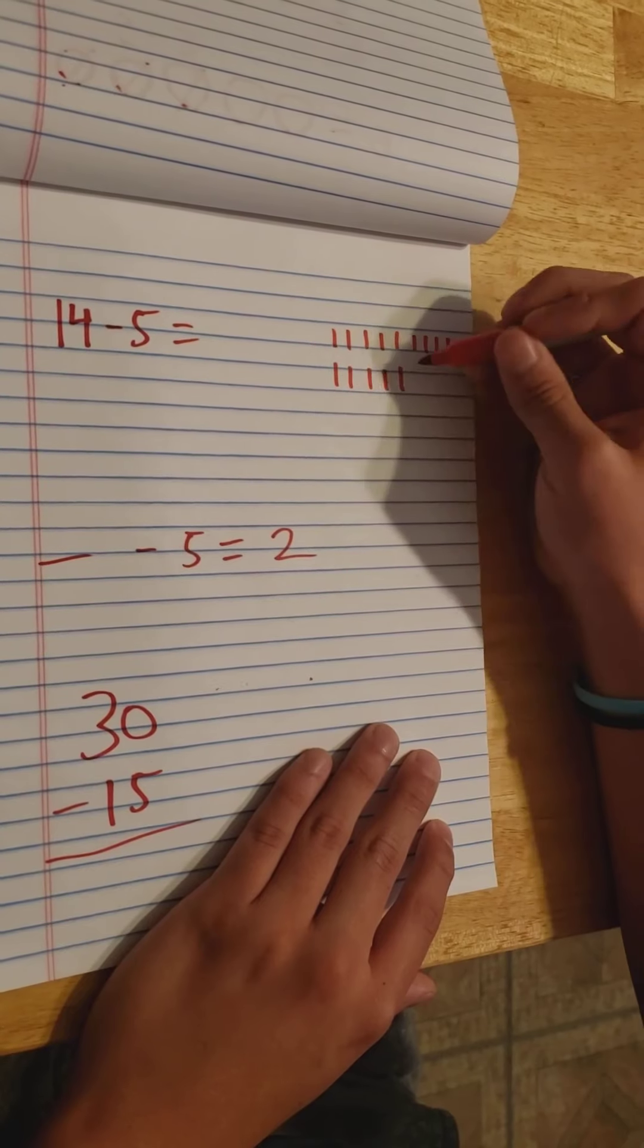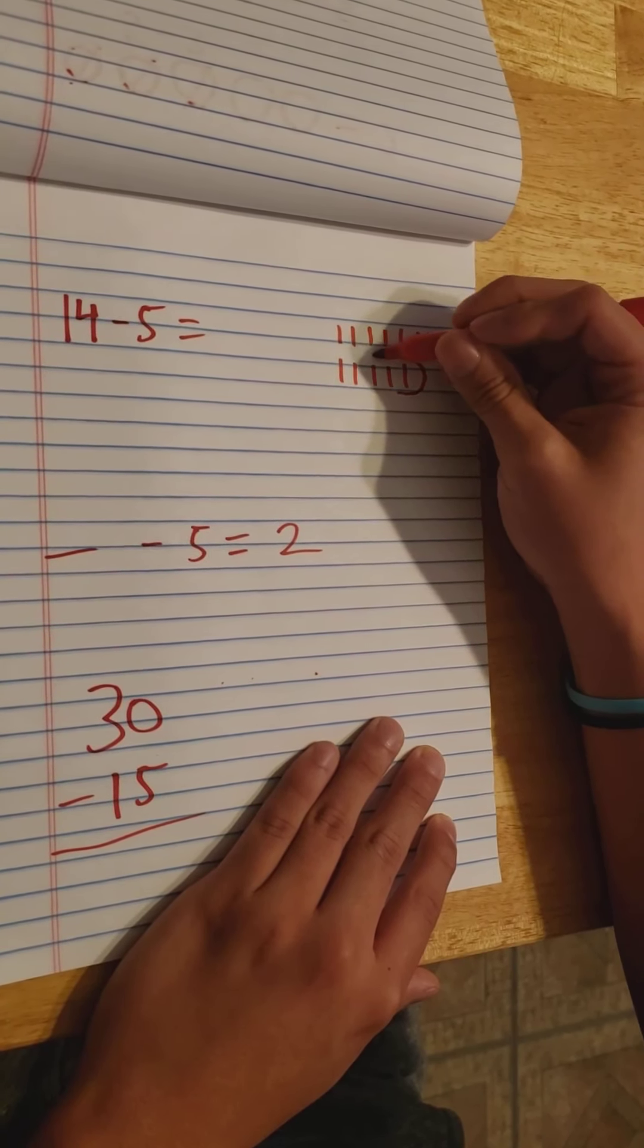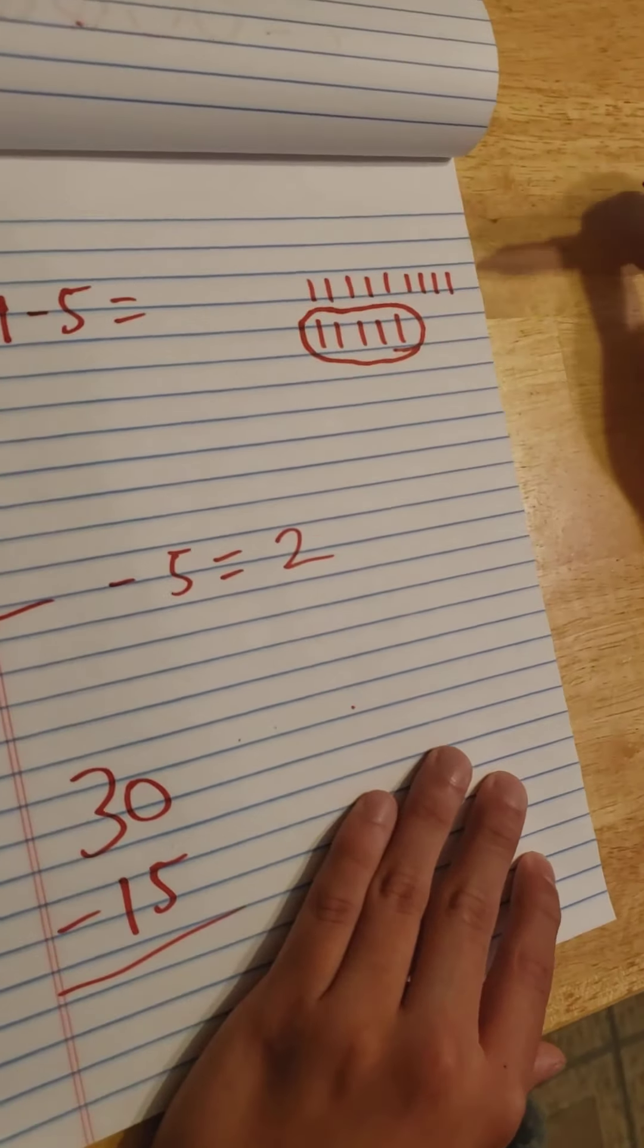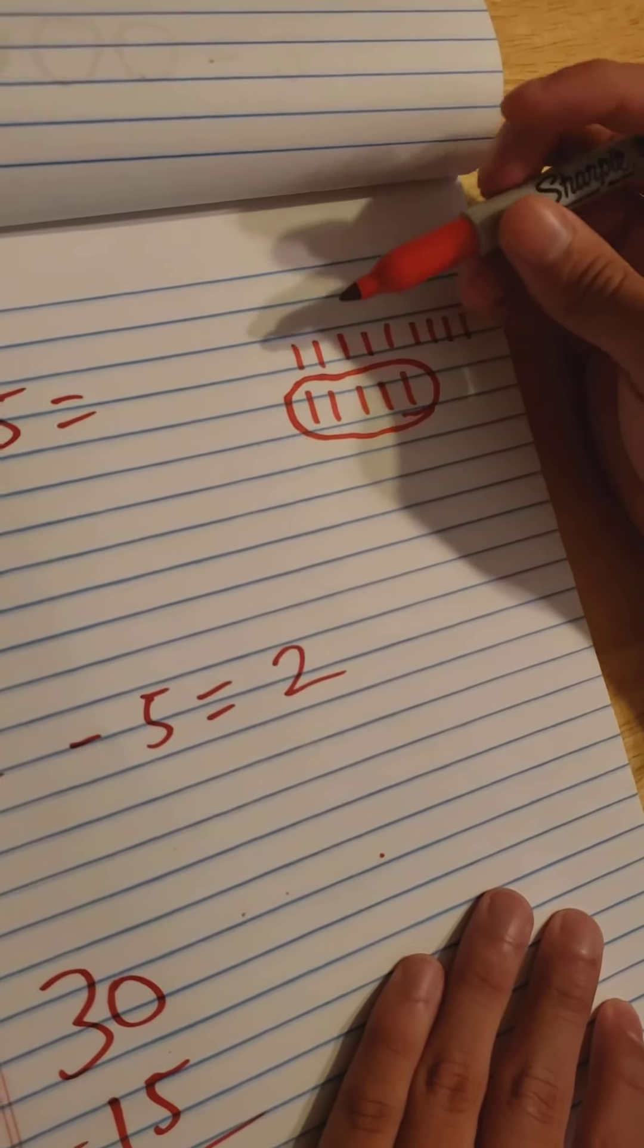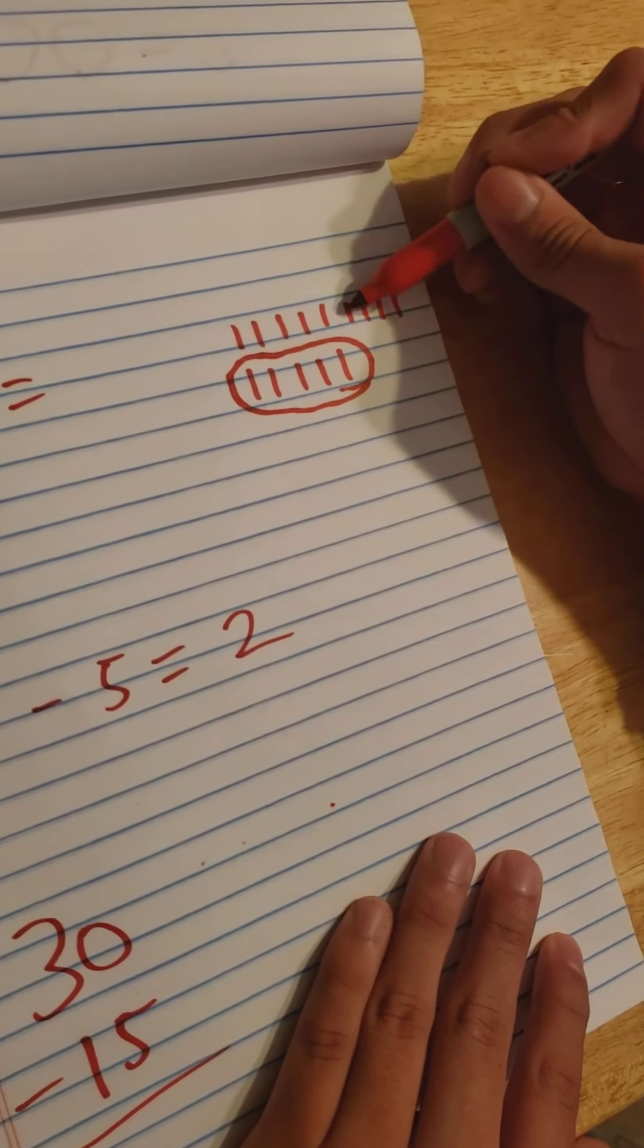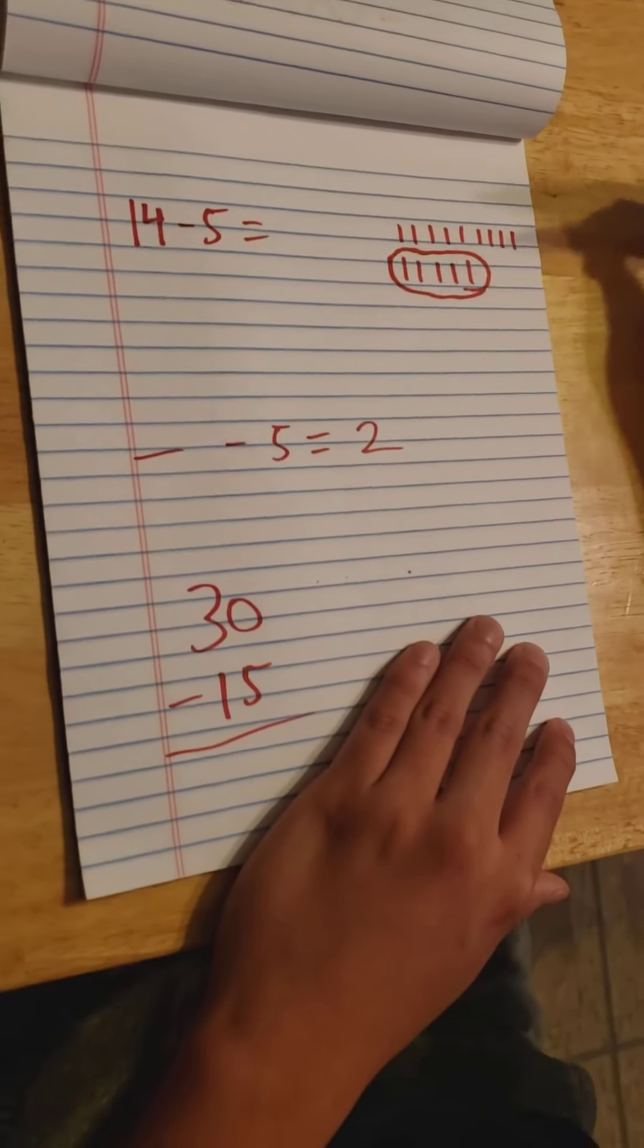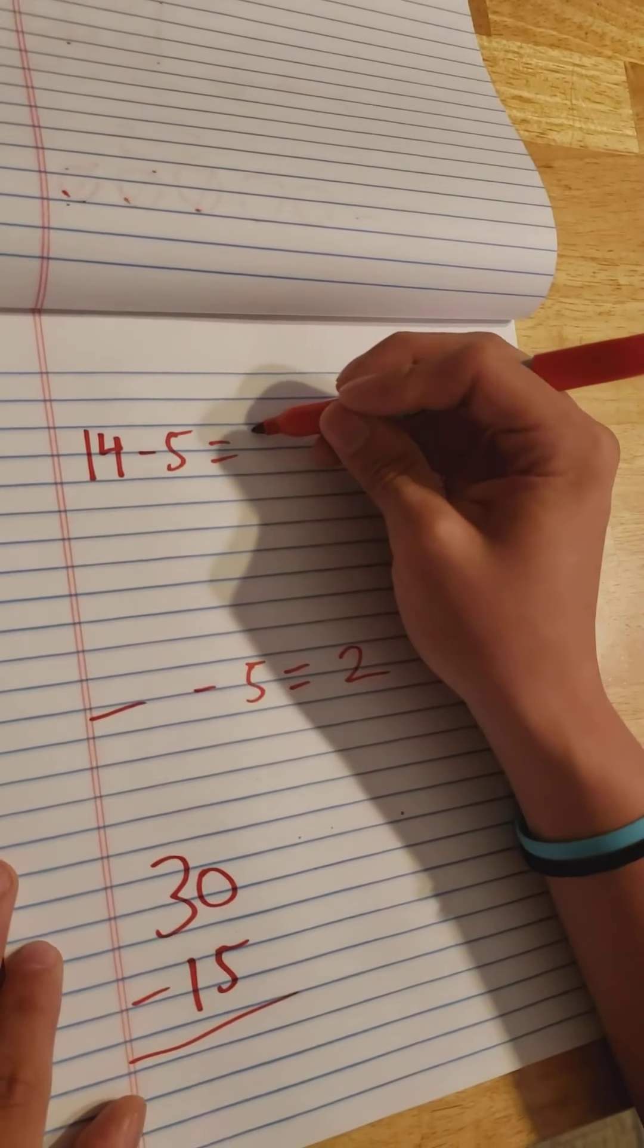Now if we take a circle and we group them with 5, because we're subtracting 5, we take these 5 away. So now we're left with whatever tally marks are left over. Let's count them out: 1, 2, 3, 4, 5, 6, 7, 8, 9. So there's 9 tally marks left. Therefore, we know that 14 minus 5 is equal to 9.